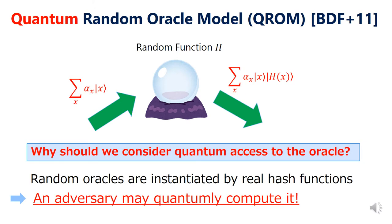The quantum random oracle model, Q-ROM, is the quantum version of the ROM introduced by Bonnet et al. in 2011. The difference from the original ROM is that in the Q-ROM, adversary is allowed to make quantum query to the random oracle — that is, it can query quantum superposition of inputs, and the oracle returns the output in superposition. The reason why we should consider such quantum access to the oracle is that the random oracle is usually instantiated with some fixed cryptographic hash functions in the real world. Therefore, if adversary has a quantum computer, then it can quantumly evaluate the hash function, and so this corresponds to quantum oracle access in the quantum random oracle model. This is why we should study Q-ROM for ensuring post-quantum security.